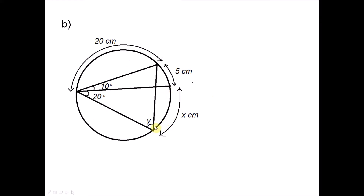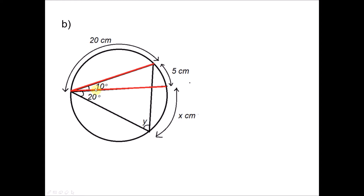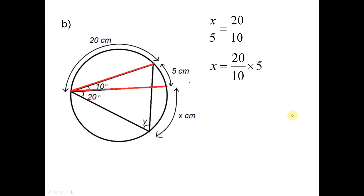Question 1B: X is the minor arc where 5 centimeters is the length of the minor arc, 20 centimeters is another arc, with angles 10° and 20° given. To solve for X, the angle 10° is subtended by the arc of 5 centimeters. Since within one circle arc lengths are proportional to the angles subtended, we can write X divided by 5 equals 20 divided by 10. Solving this gives X equals 10 degrees.